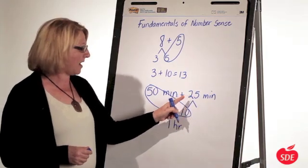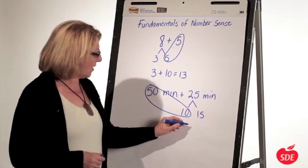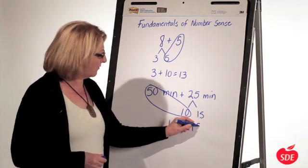The number bond for 25 is 10 and 15. So I've got 1 hour, 15 minutes.